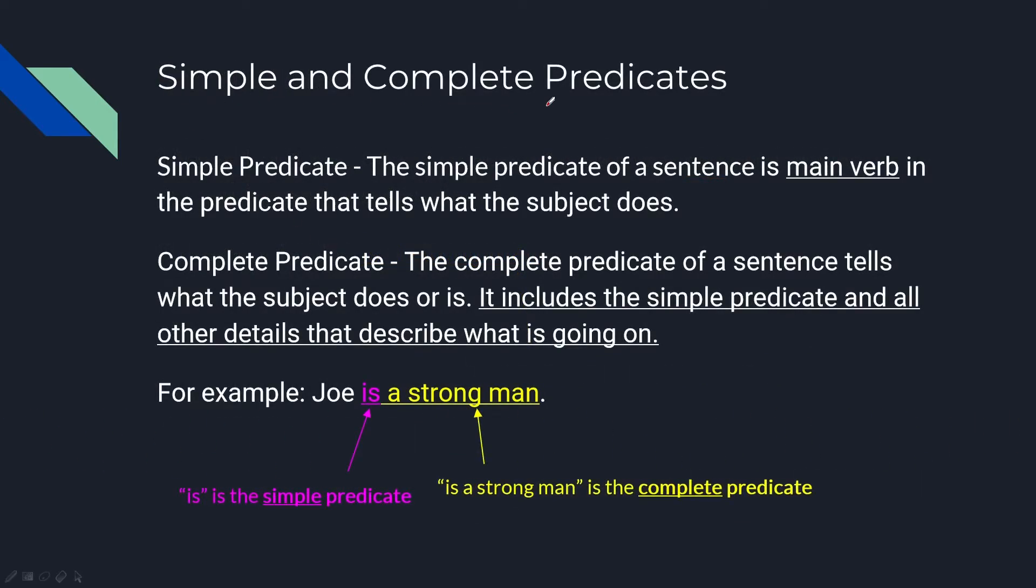Simple and complete predicates. Simple predicate: The simple predicate of a sentence is the main verb in the predicate. It tells what the subject does.